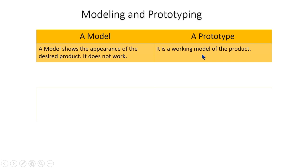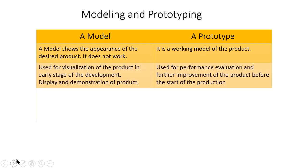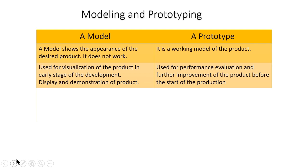A prototype, however, is a working prototype — it will have all the functionalities and all the features we are trying to incorporate. It is a working model of the product. The second difference: models are used for visualization — to visualize the size, shape, or appearance after development — and are used for display or demonstration purposes. On the other hand, a prototype is used for performance evaluation and performance analysis. Based on performance evaluation, we can further improve the product before the actual start of production.